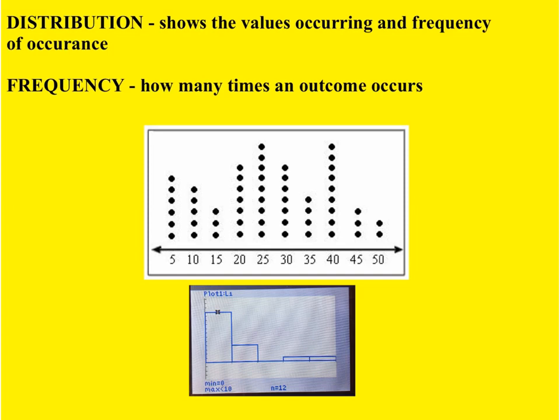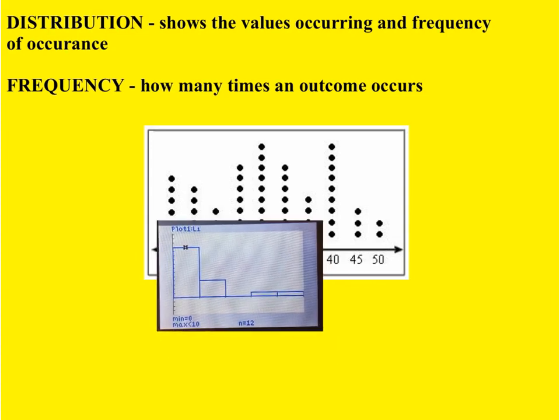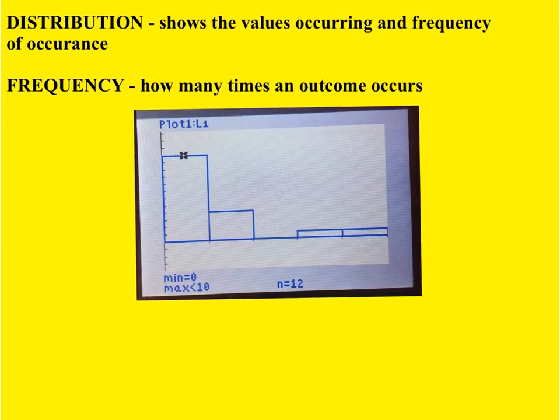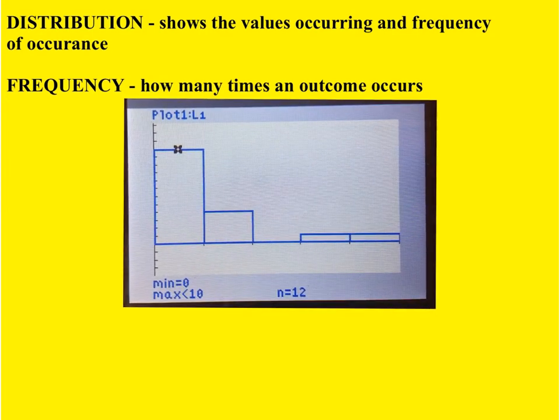A distribution. A distribution is something that shows the values that occur and how often they occurred. I put a sample here that shows that the values 5 to 50 occurred. 50 occurred twice, 45 occurred three times. But I also wanted to just show this is the plot we made in the previous video on number of pairs of shoes.